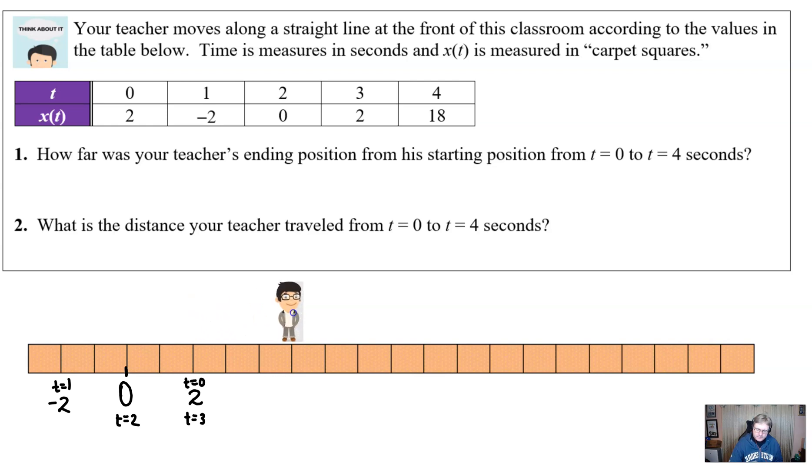Three, four, five, six, seven, eight, nine, 10, 11, 12, 13, 14, 15, 16, 17. Oh, I just made it. Probably see why I had to put zero so far over. So, yep. Right there. At T equal four. T equal four. I am at square 18.